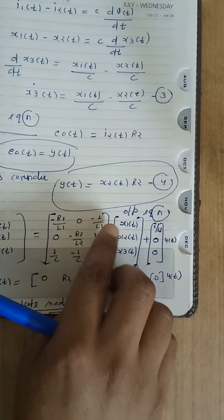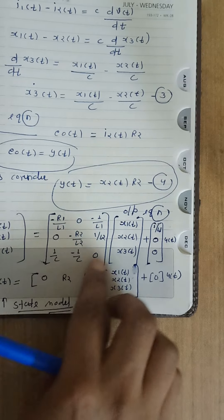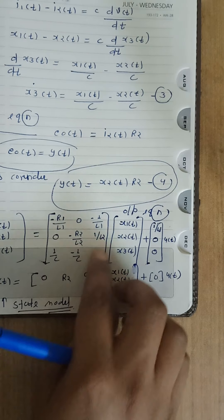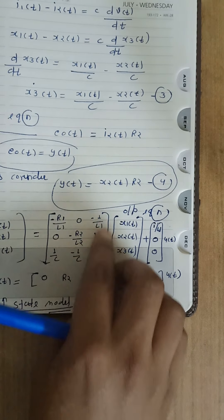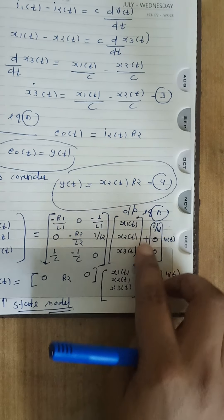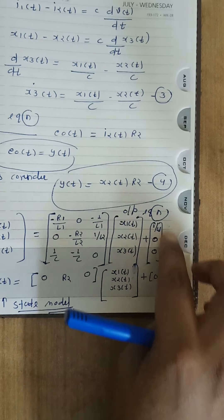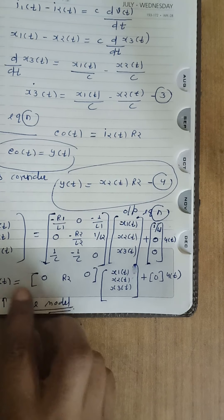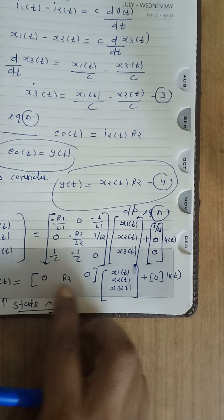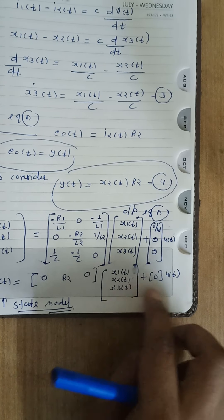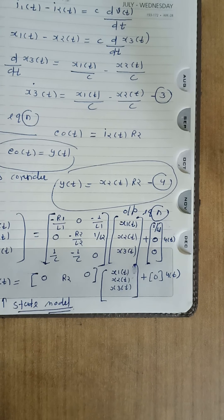To summarize: the first matrix defines the value of A, the second matrix defines the value of B, the third matrix defines the value of C, and the fourth matrix defines the value of D. Thank you.